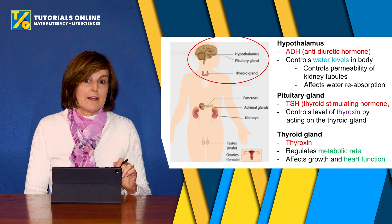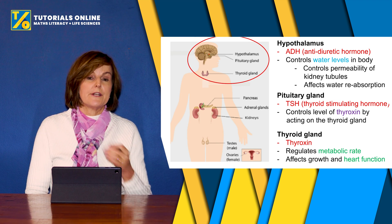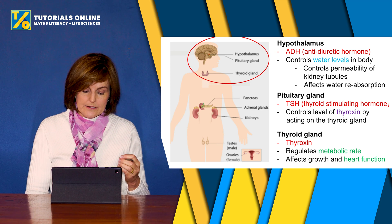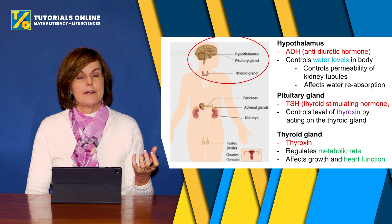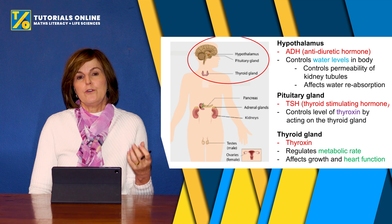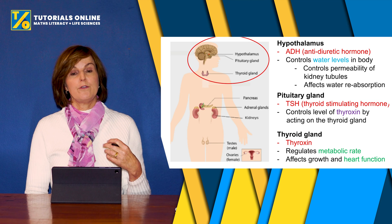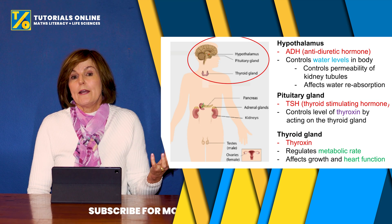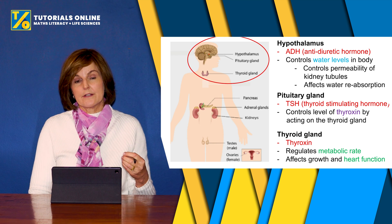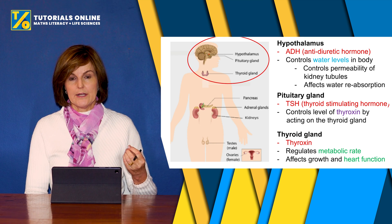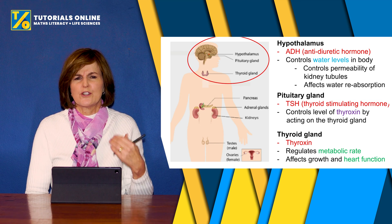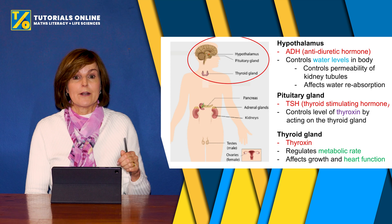The thyroid gland is lower down, at your throat area in the lower neck — it's a butterfly-shaped organ and it regulates the metabolic rate of the body. If you have too high a level of thyroxin, you'll burn energy very quickly and might be quite thin. If the thyroid is underactive and less thyroxin is produced, you might be overweight. Another effect of too much thyroxin is a very high heart rate, feeling like your heart is racing all the time.